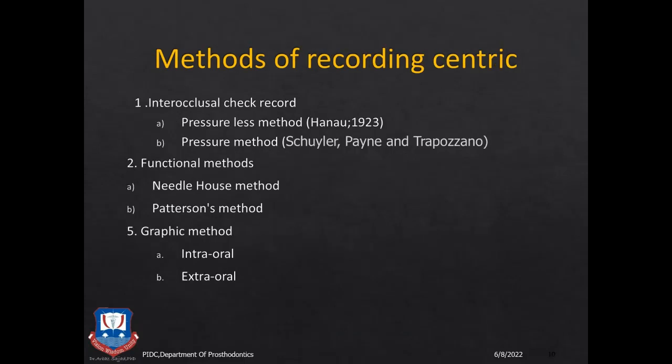Coming to the various methods for recording Centric Relationship. The first is the interocclusal check record — also known as recording jaw relation or maxillomandibular relationship using wax occlusal rims. These can be recorded by applying pressure or without applying pressure while the patient is biting in centric relationship.